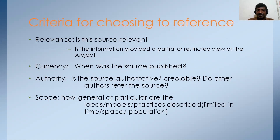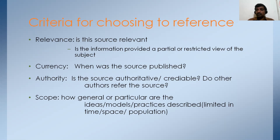These are the important criteria for choosing a reference. The first one is relevance — it should be relevant to your article, thesis, or work. Then currency — when the article was published. Authority — who wrote the article, which institution the author belongs to, which publisher published it, whether it is a journal article or book. Apart from this, one important criterion I suggest: use the best articles, meaning highly cited articles. I will explain how to collect highly cited articles later.